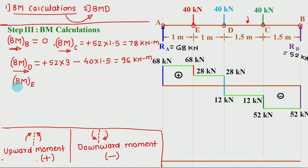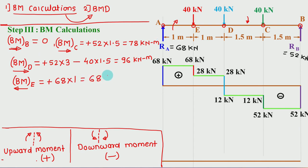BM at E: consider the left-hand side — only RA is present, so plus RA × 1 = 68 × 1 = 68 kN·m. BM at A: consider the left-hand side — nothing on the left, so BM at A = 0.